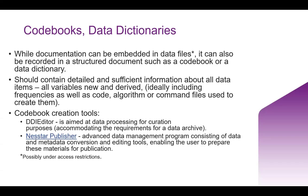A code book or data dictionary should contain detailed and sufficient information about all of the data items, including variables that are either new or derived, frequencies, and command files used to create those derived variables. We also have code book creation tools: the DDI editor, which is aimed at data processing for curation purposes, which can be used prior to depositing your collection in the archive. And we also have a Nestar publisher. There is a lot of existing information on these and how they can be used, so please do check out some of the links there for further information about any of those tools.